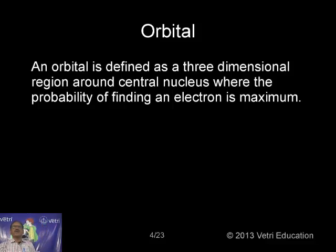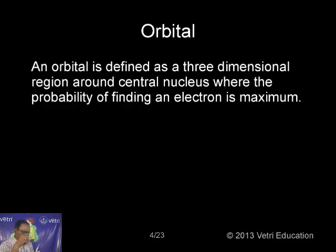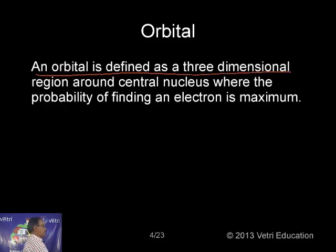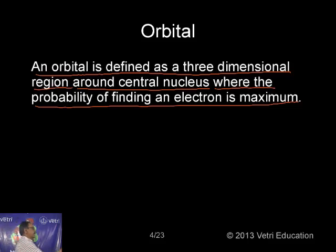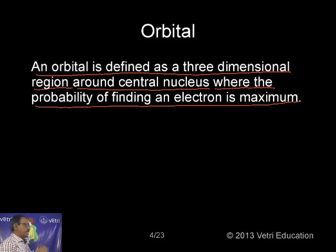Now let me define: what is ψ²? What is an orbital? An orbital is defined as a three-dimensional region around the central nucleus in an atom, where the probability of finding an electron is maximum. This is called an orbital.